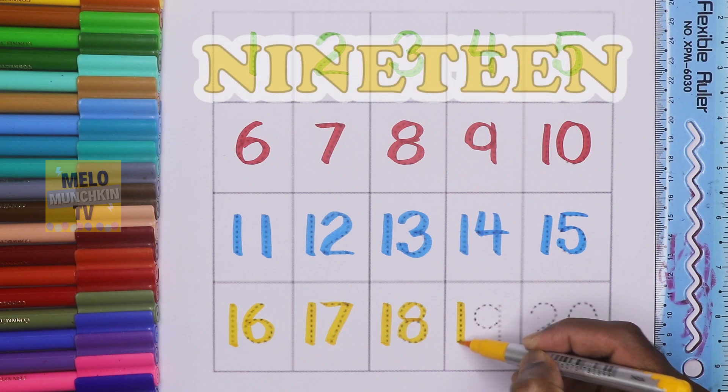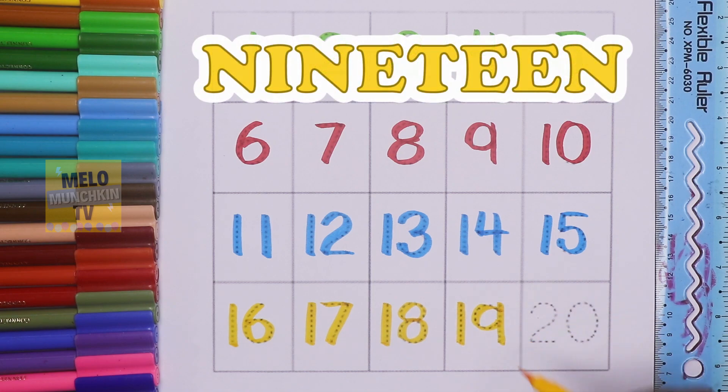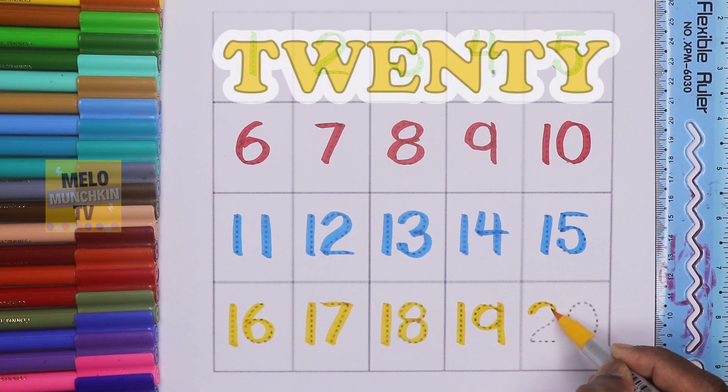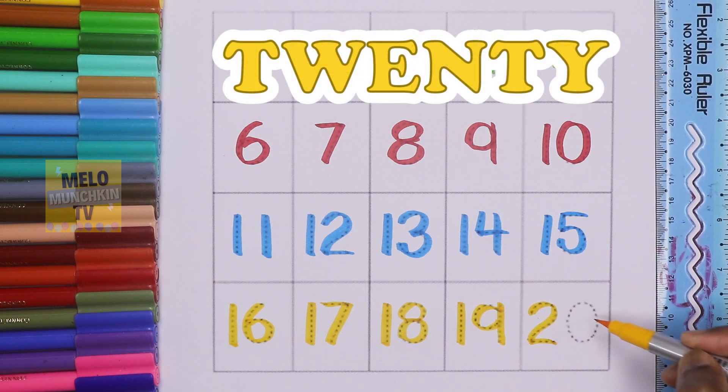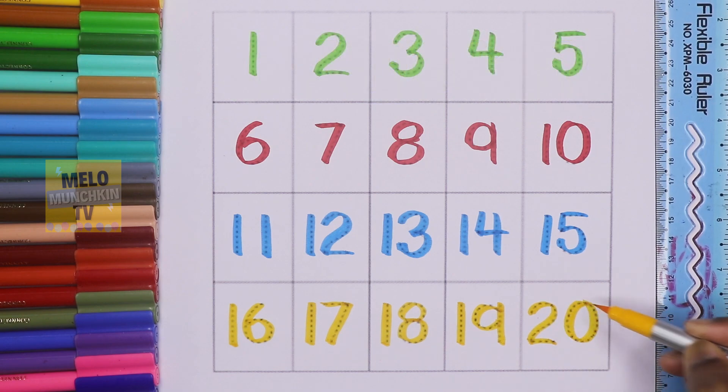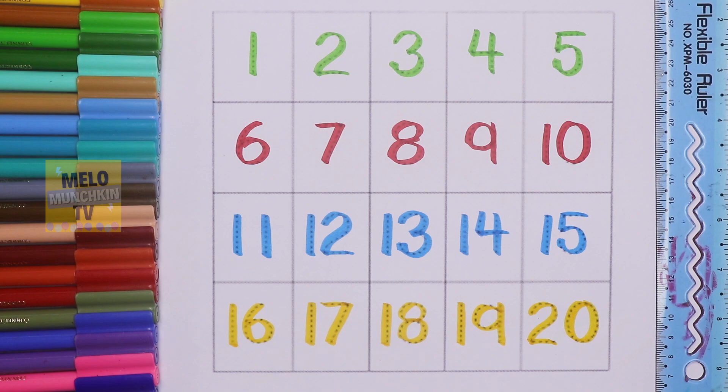19, nineteen. 20, twenty. We've completed our numbers from 1 to 20 along with the number names or you can say the number spellings.